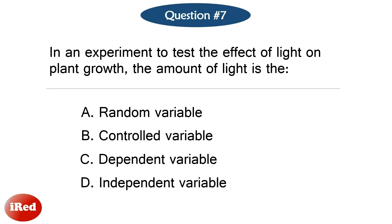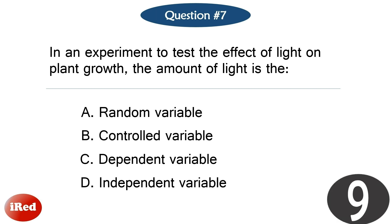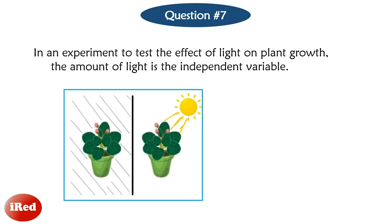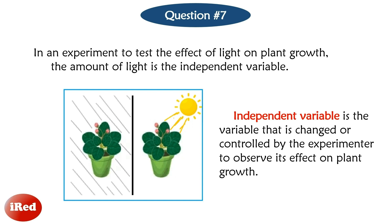Question number 7: In an experiment to test the effect of light on plant growth, the amount of light is the independent variable. The correct answer is letter D. The independent variable is the variable that is changed or controlled by the experimenter to observe its effect on plant growth.